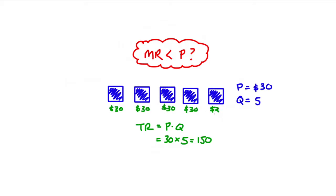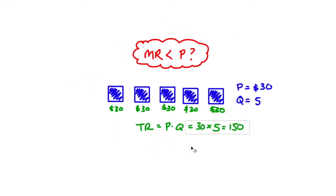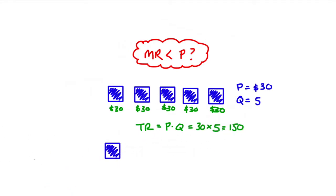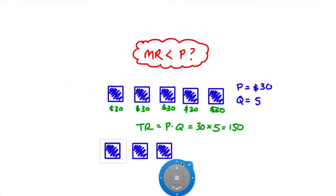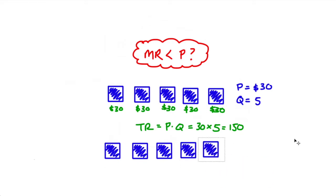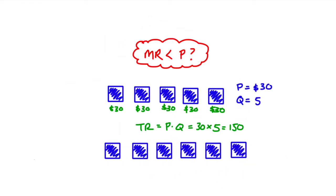Now let's imagine that I increase my production by one. So instead of five boxes, now I have six boxes, and I'm going to sell those six boxes. We're going to think about the marginal revenue associated with that additional box.